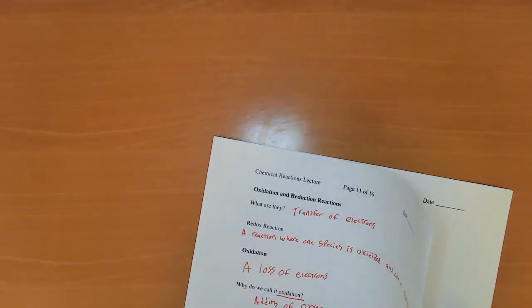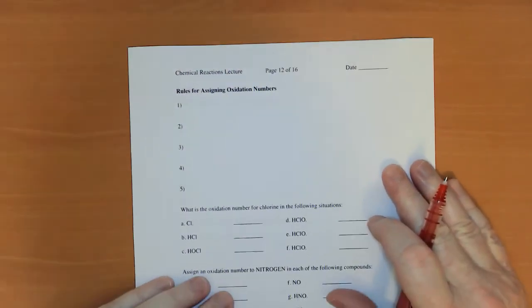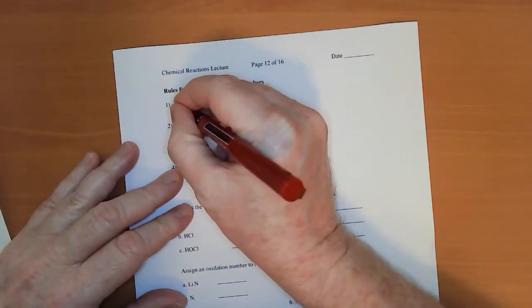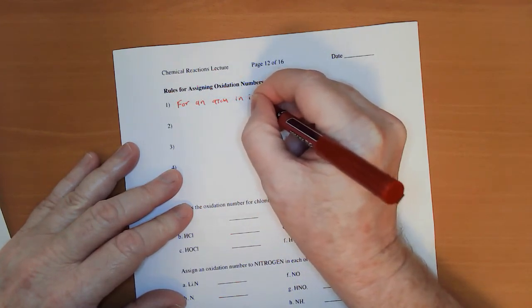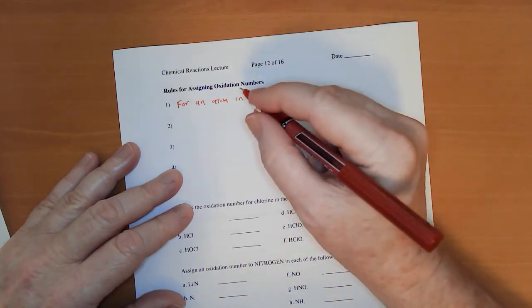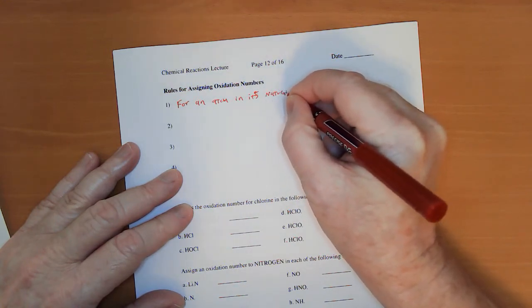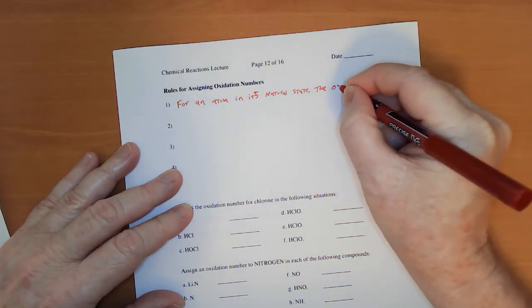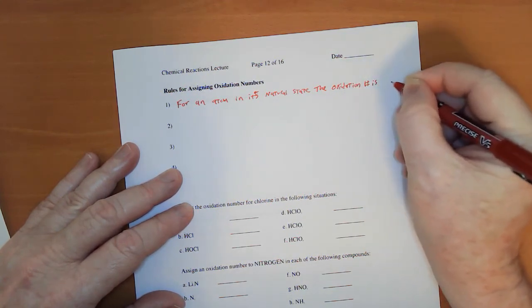Next step. We have some rules for assigning oxidation numbers. They're not terribly complicated. I'm hoping you remember a bit of this from the spring. First off, for an atom in its natural state, the oxidation number is zero.